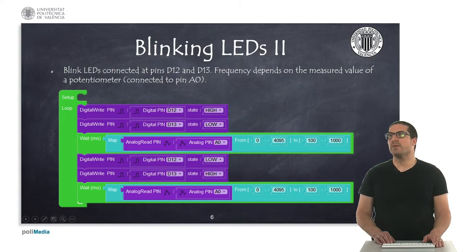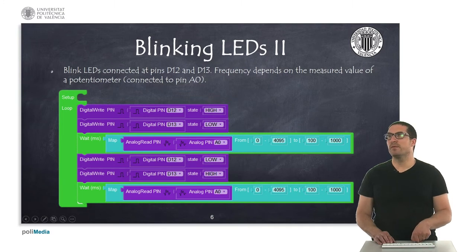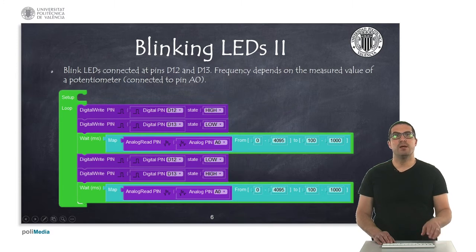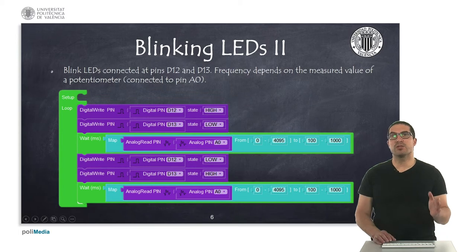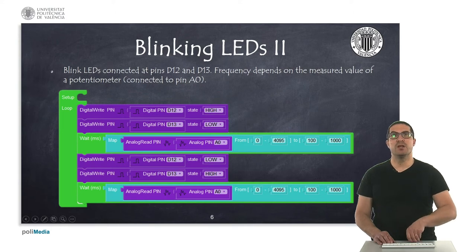In this second exercise, the LEDs are connected to D12 and D13. What we have is we're reading the value of the analog input — the potentiometer — and we are mapping this value and waiting an amount of time depending on the read value. The value should be between 0 and 4095, and we're mapping this into milliseconds — between 100 milliseconds and 1000 milliseconds — simply changing the blink frequency depending on the value of the potentiometer.